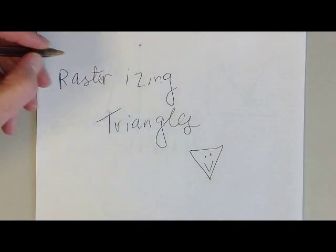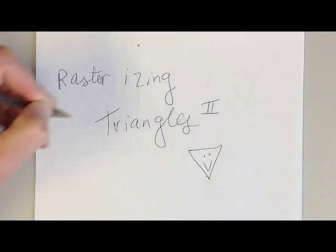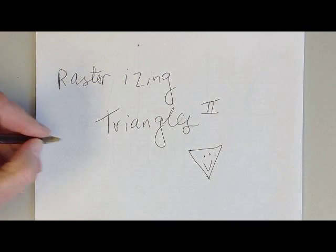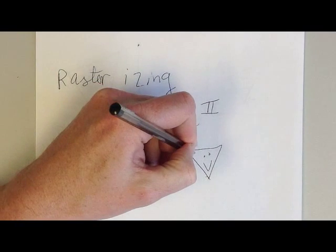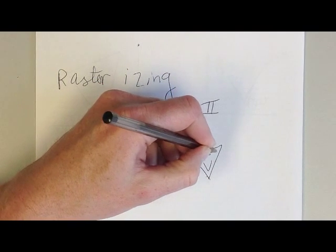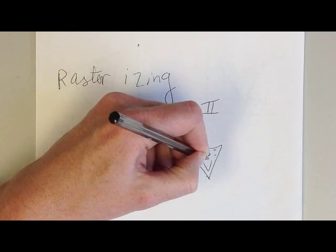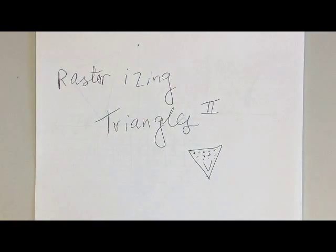All right, so this is rasterizing triangles, part two. This time we'll be looking at figuring out which pixels and which scan lines should be colored in.